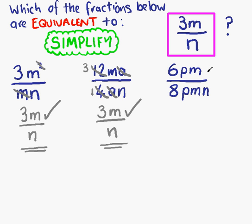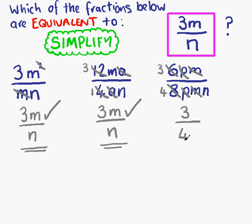What about the third fraction? We have 6 times p times m on the top and 8 times p times m times n on the bottom. First, we cancel one of the p's on the top with the p on the bottom, and the m on the top with the m on the bottom. We're left with 6 and 8, which can be simplified: 2 goes into 6 three times and 2 goes into 8 four times. That leaves us with 3 on the top and 4n on the bottom. So after simplification the fraction is 3 over 4n — that's different from the one in the box, so the third fraction is not equivalent.